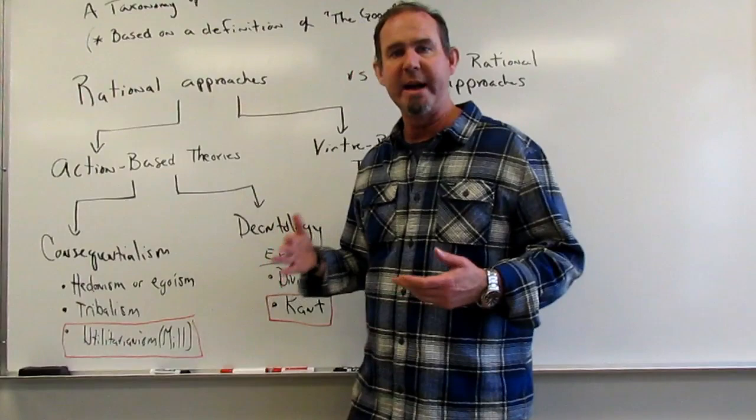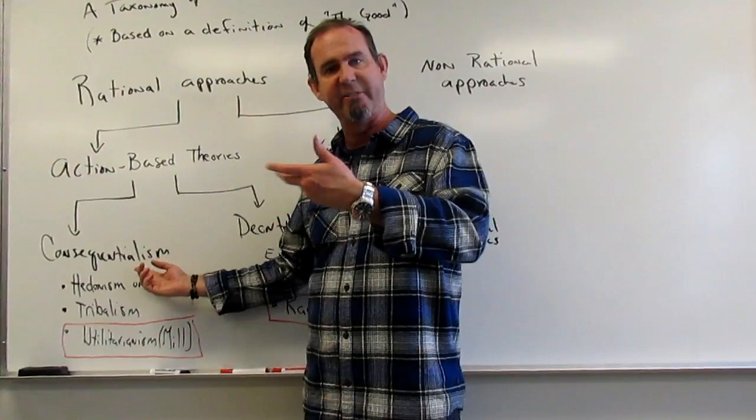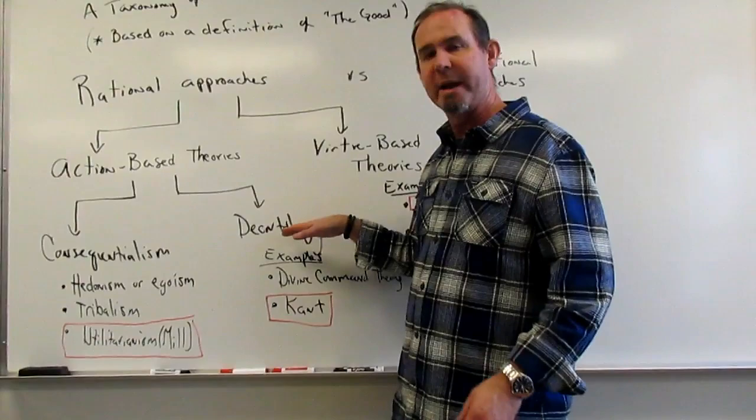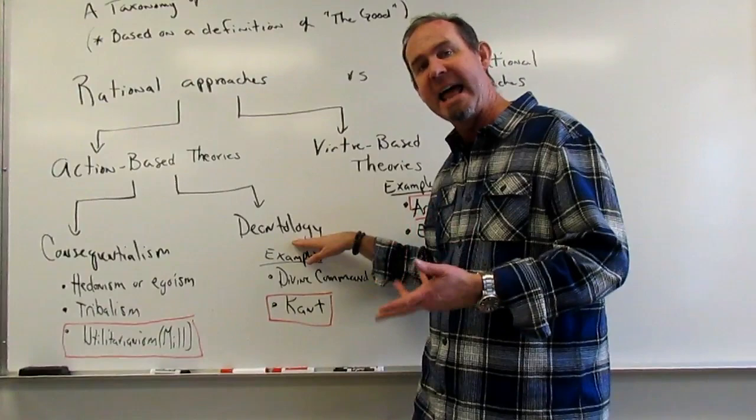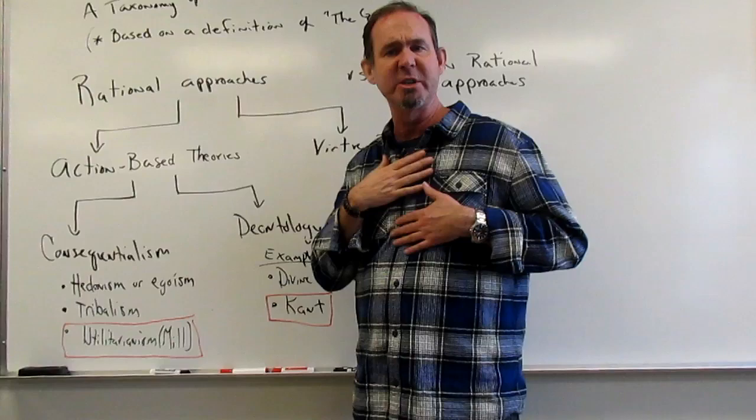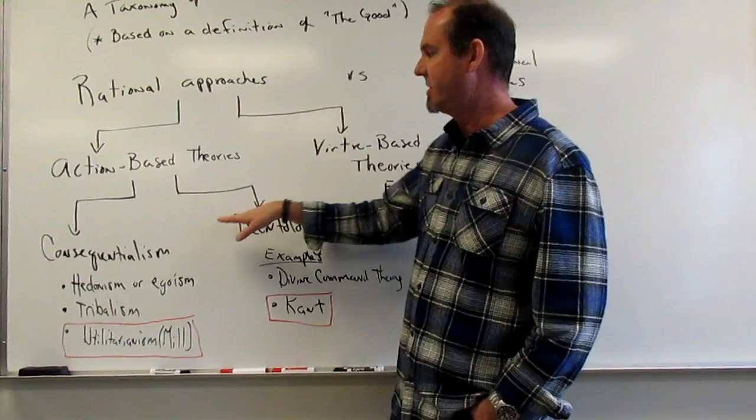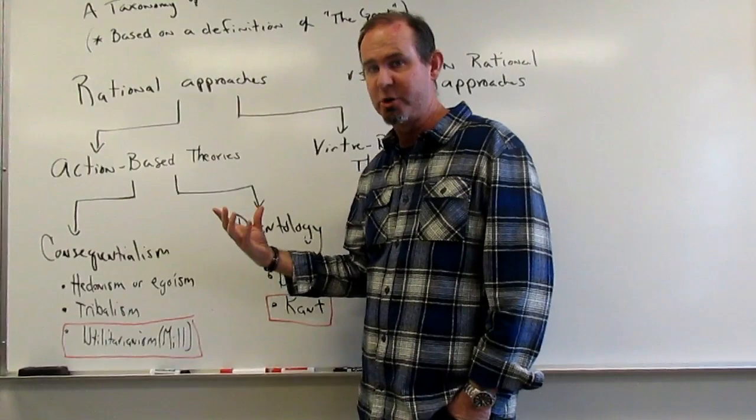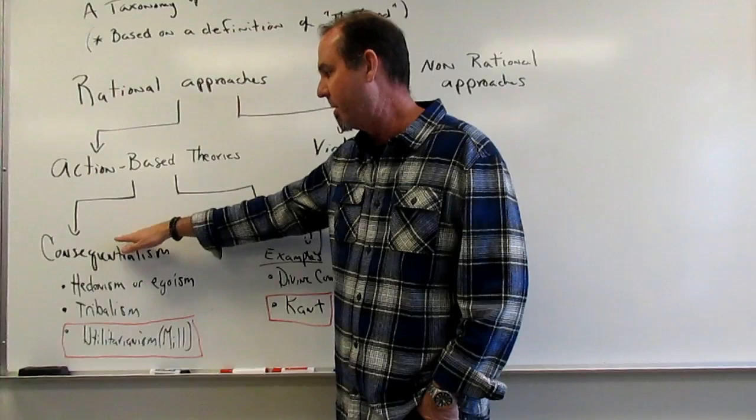My action is good or bad depending on whether it produced favorable consequences. The other side says no, we don't want to judge what you did in fact do. What matters was what you were intending—where was your will, what were you thinking of doing, where was your heart? We call that position deontology. Both are action-based theories judging an individual's actions as moral or immoral. But in consequentialism, your action is moral or immoral because of its consequences. In deontology, it has more to do with intention.